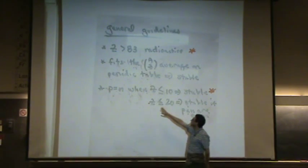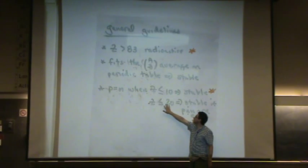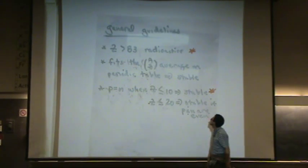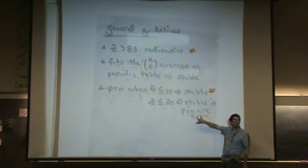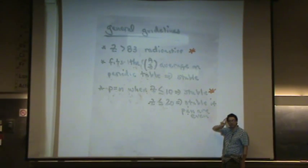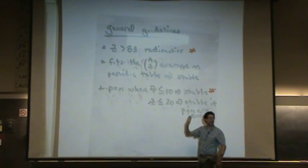The protons and neutrons are equal, Z is less than or equal to 20, that means the protons are 20 or less. So it's stable, and the protons and neutrons are even numbers. So protons and neutrons are even numbers, they're equal and less than or equal to 20, that's stable.